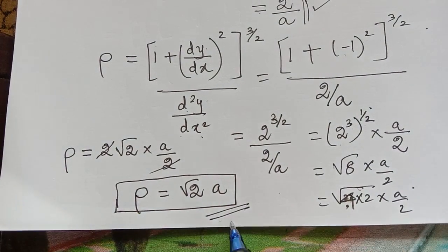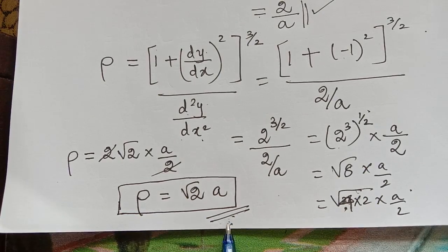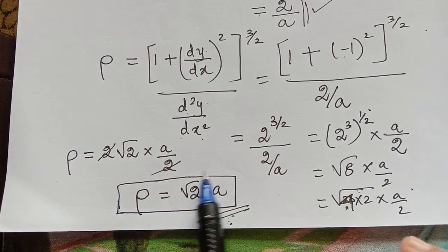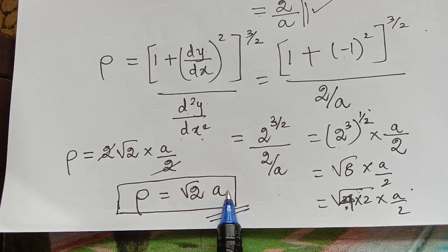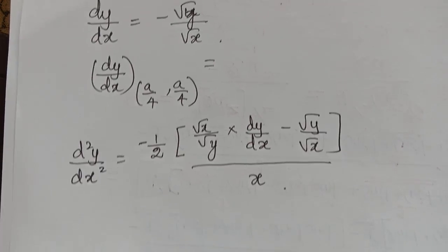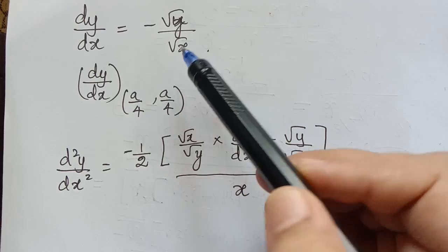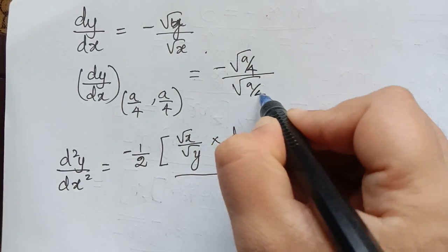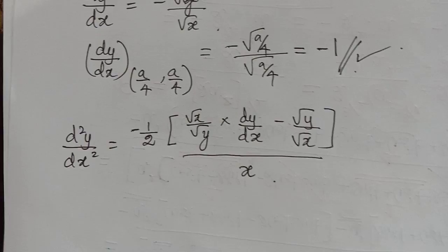There is another problem where the same curve √x + √y = √a requires the radius of curvature at the point (a/4, a/4). For this point, dy/dx = −√(a/4) / √(a/4) = −1, same as before.